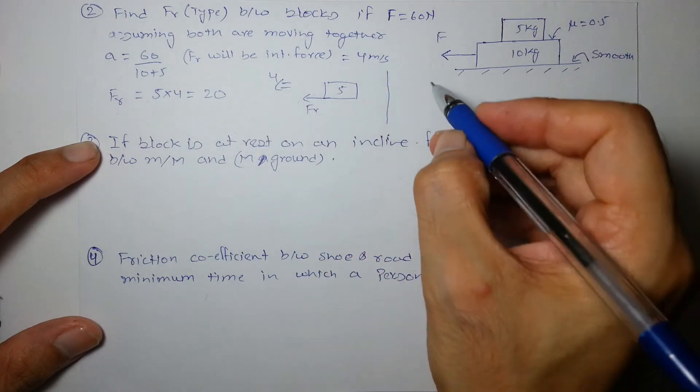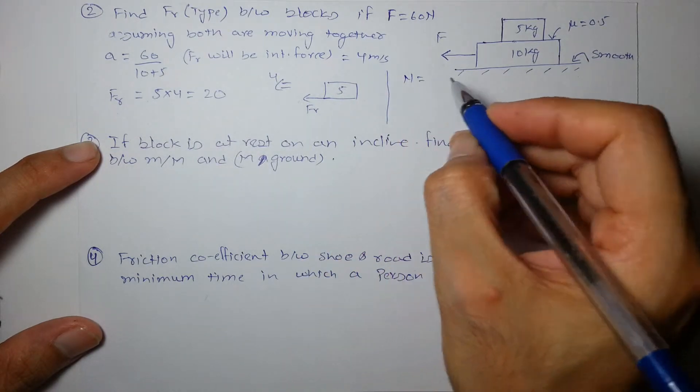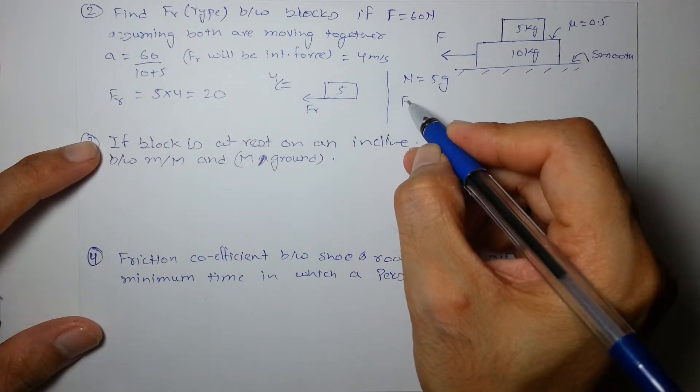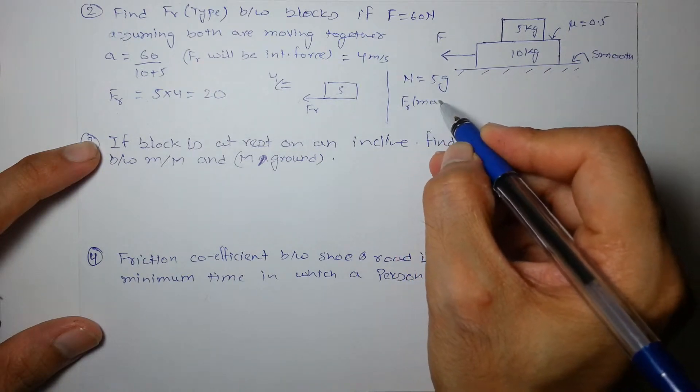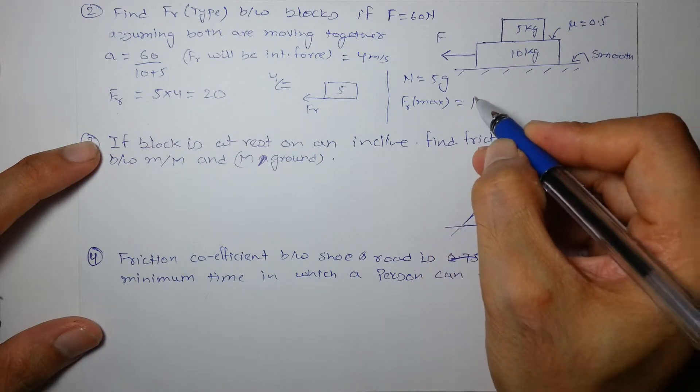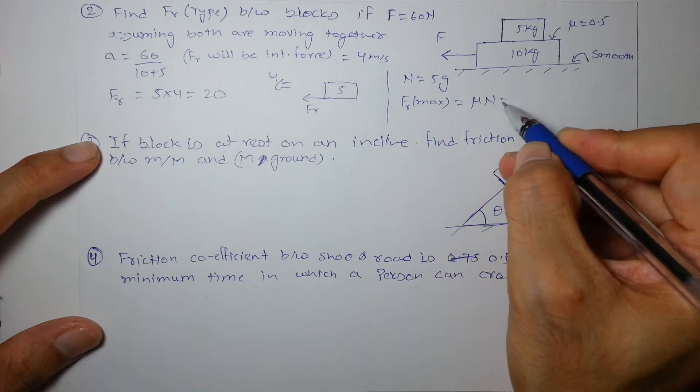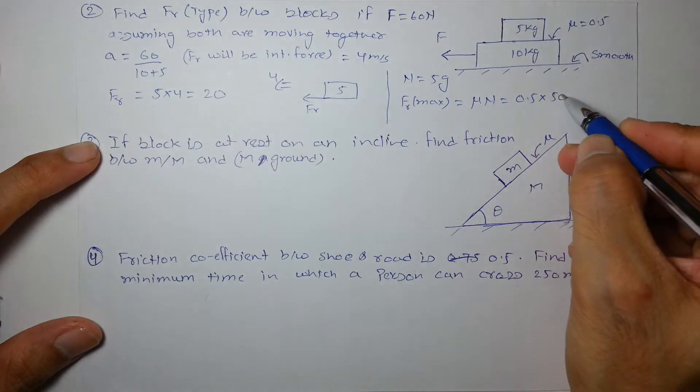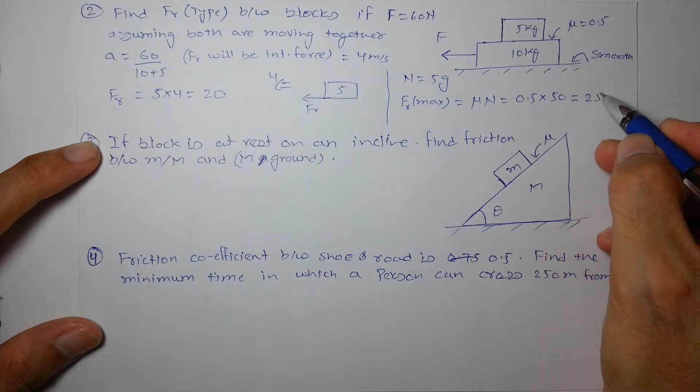Let's calculate what is the maximum friction. Normal between the blocks is nothing but 5g and Fr max, the maximum possible friction, is mu into N which is 0.5 into 50 or 5g, so it comes out to be 25 N.